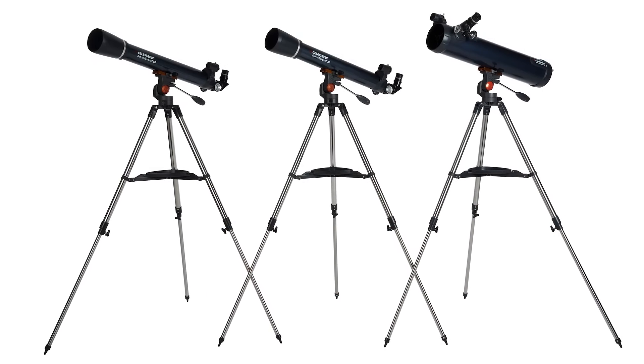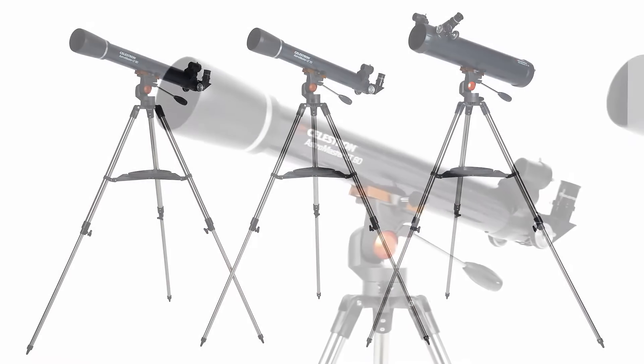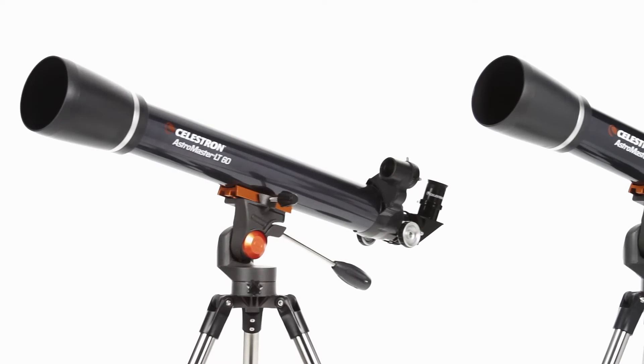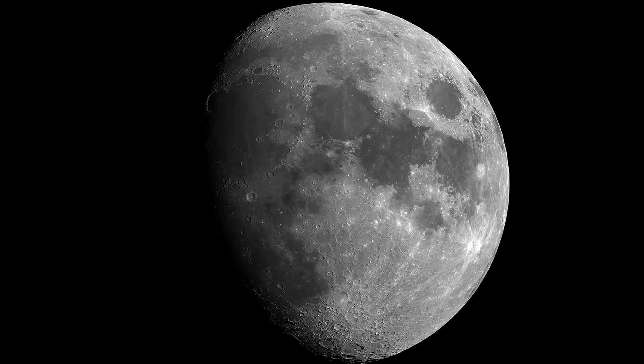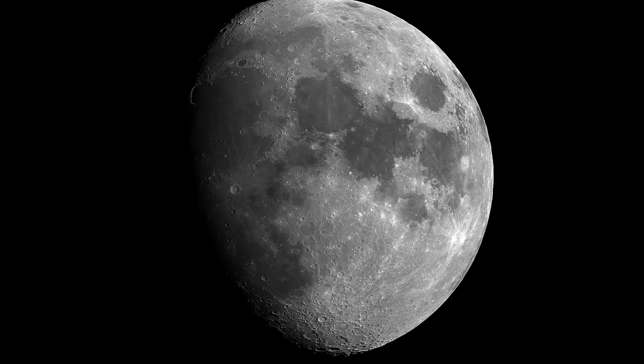There are three AstroMaster LT models to choose from. The compact 60 and 70 millimeter refractors reveal dazzling views of craters on the moon, the rings of Saturn, the moons of Jupiter, the Orion Nebula,